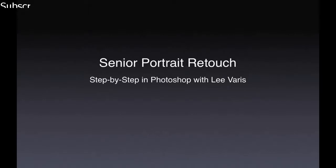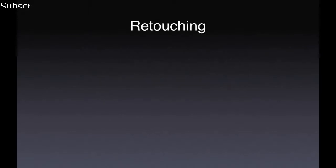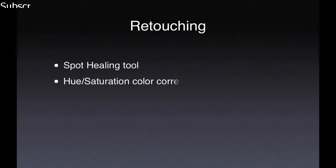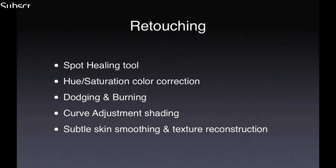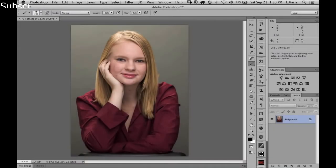Welcome to this step-by-step tutorial. We'll examine the spot healing tool, a hue saturation color adjustment for uneven skin tones, some dodging and burning to even out skin tones, shading and shaping with a curve adjustment layer plus layer mask, and finally a subtle skin smoothing technique to add back some skin texture.